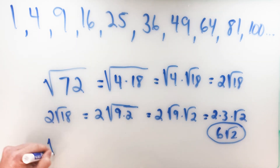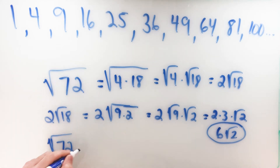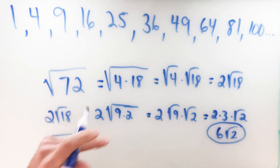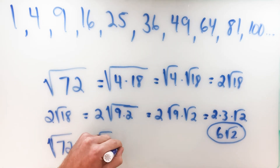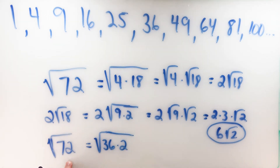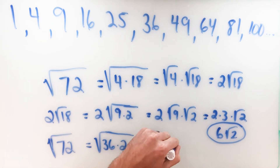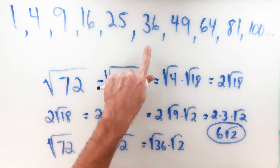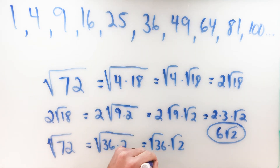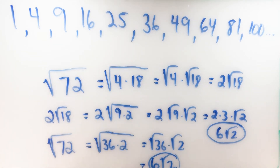A quicker way: the largest perfect square that can be divided out of 72 is actually 36, because 36 times 2 is 72. Using 36 as our factor and knowing that the square root of 36 is just 6, we get directly to 6 times the square root of 2. So the quickest path is always finding that largest perfect square that can be divided out of the number.